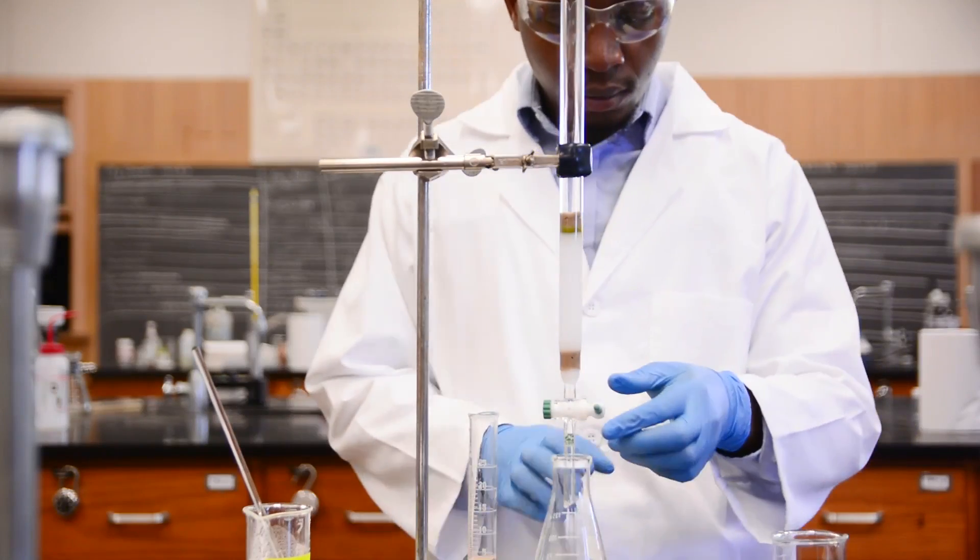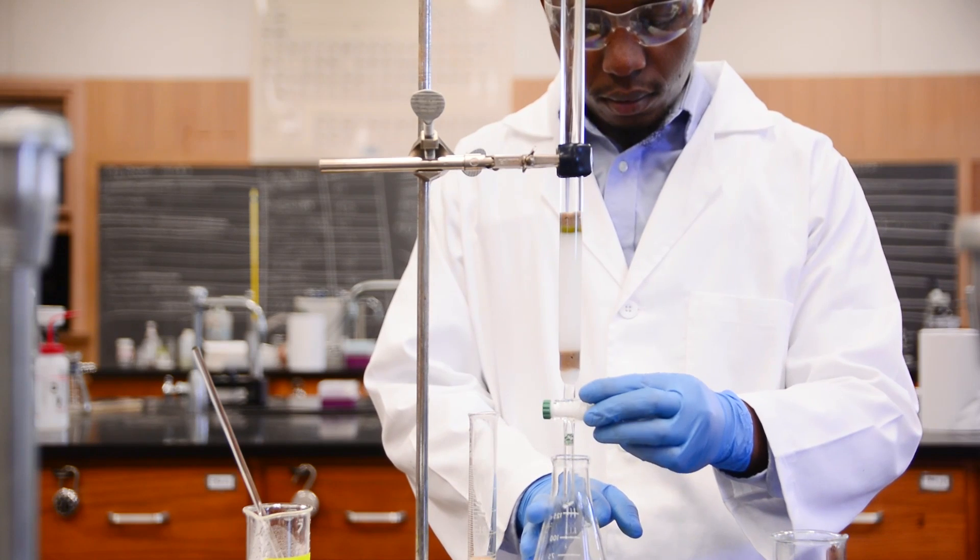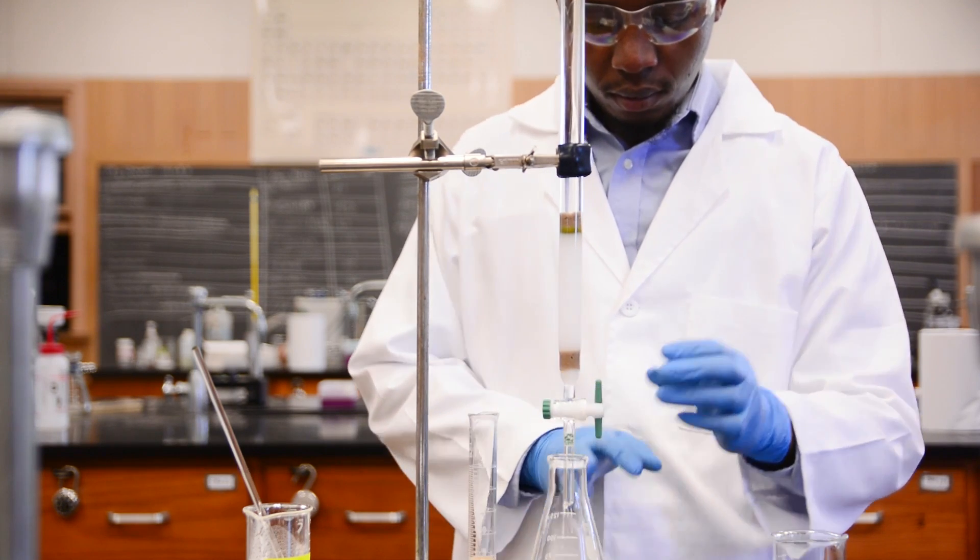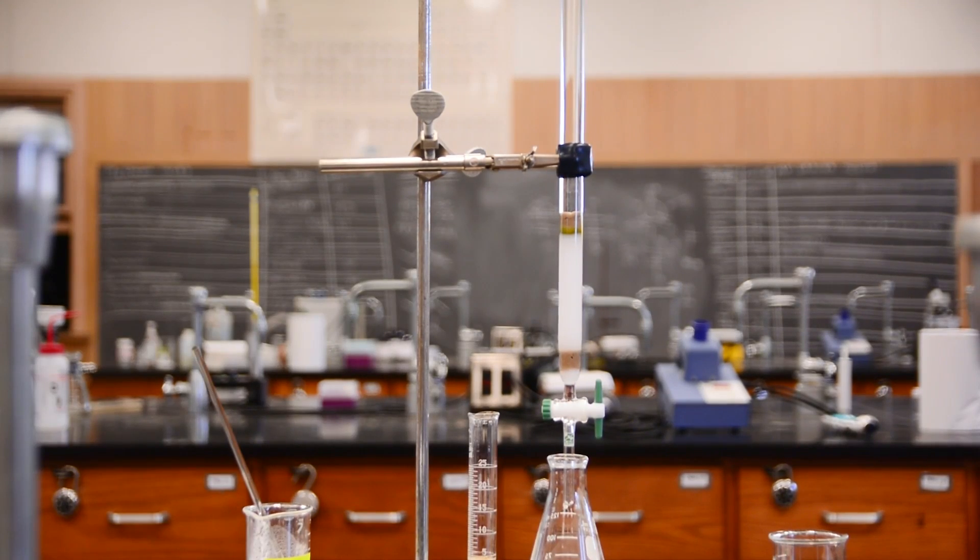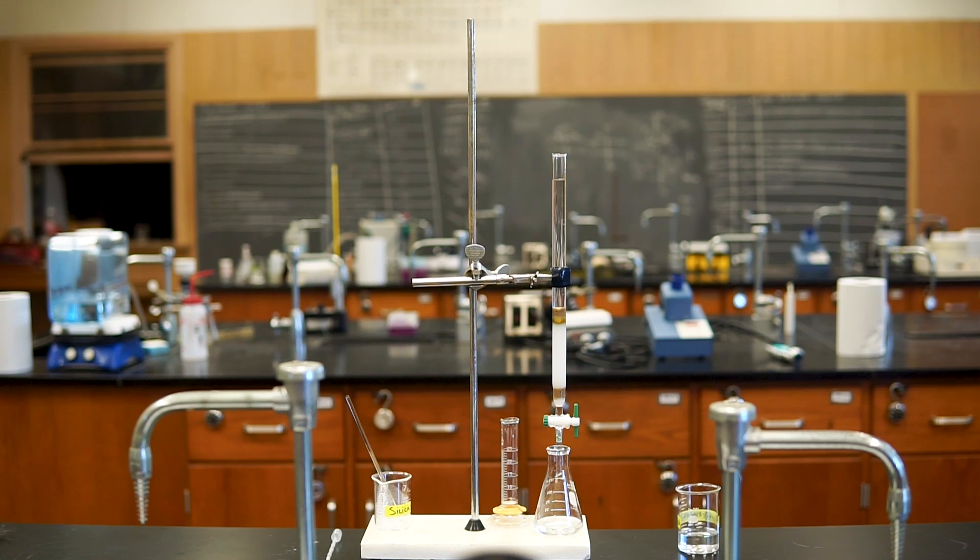We're now ready to run our column and collect the fractions. Let's open the stopcock. We don't have to start collecting fractions immediately as there is no way for our compounds to immediately be exiting the column, but soon after beginning you will want to begin collecting fractions in numbered vessels. Typically these will be small Erlenmeyer flasks, but today we will be using test tubes. Start collecting and just move to the next one whenever the current one is full, or sooner if you think that a new substance is about to exit the column. It is very important that you monitor the solvent level as you collect your samples.